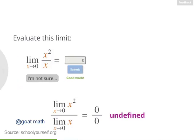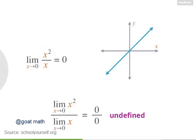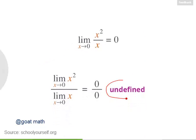This limit actually equals 0. The graph of this function looks just like the graph of y equals x, except x cannot equal 0, because that would mean there's a 0 in the denominator. So this graph has a hole at x equals 0, and you can see that as x gets closer and closer to 0 without equaling 0, the y value also approaches 0. So while splitting the limits gave us a result that was undefined, this limit actually equals 0.